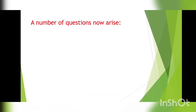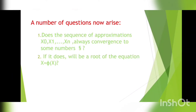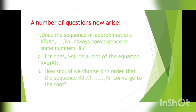A number of questions now arise. Does the sequence of approximations x0, x1, ... always converge to some number? If it converges, will it be a root of the equation x = φ(x)? How should we choose φ(x) in order that the sequence x0, x1, ..., xn converges to the root?